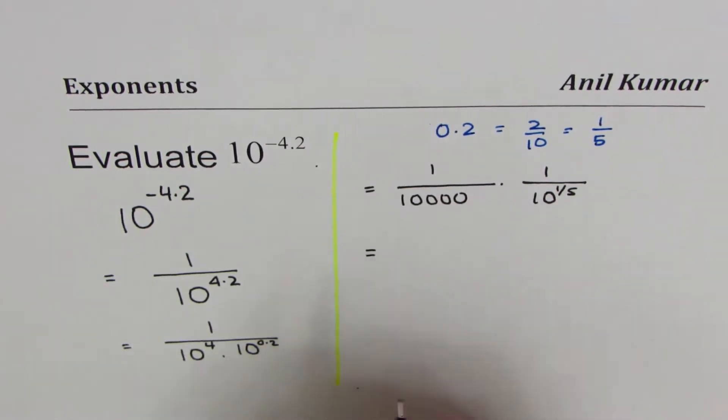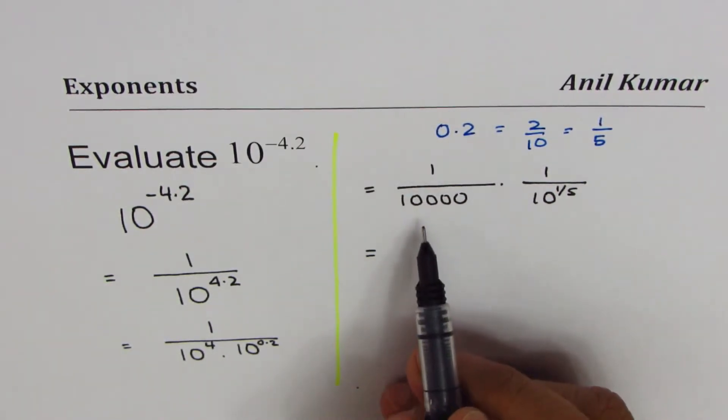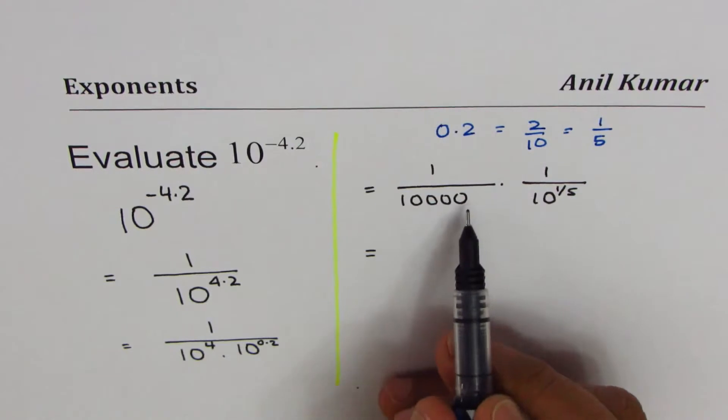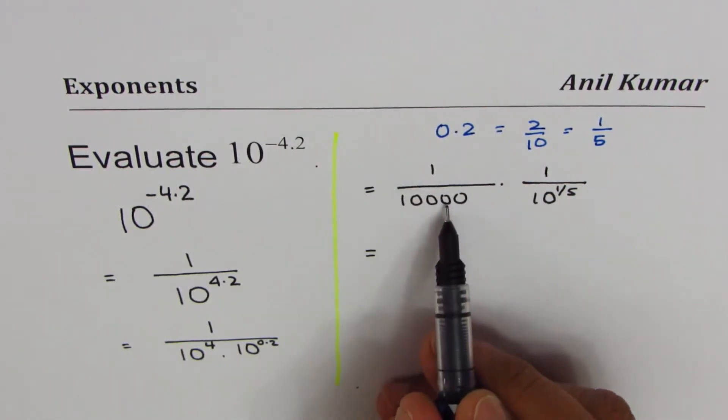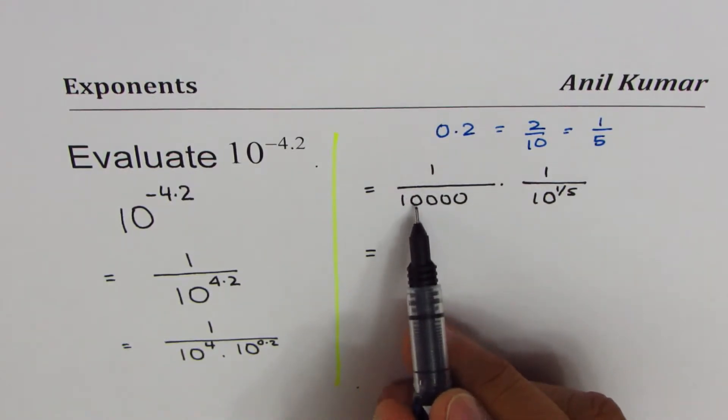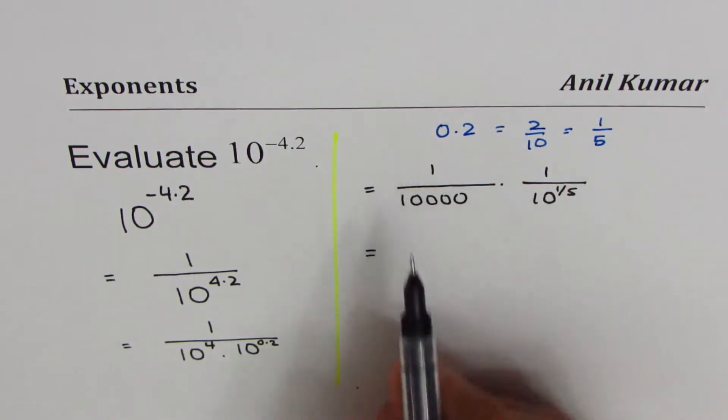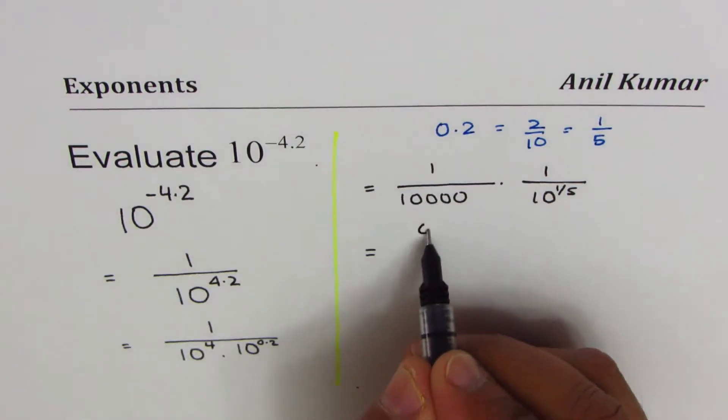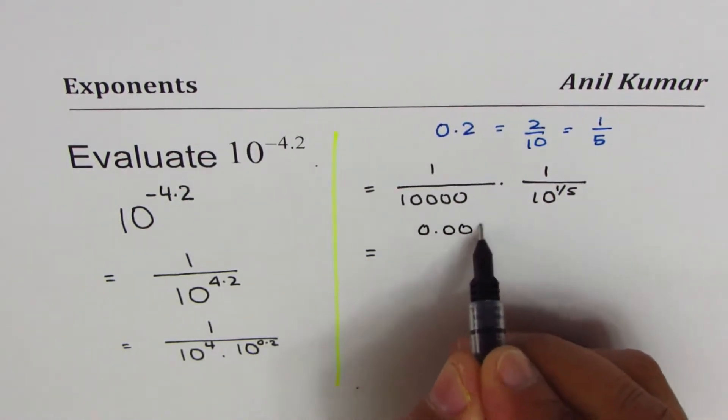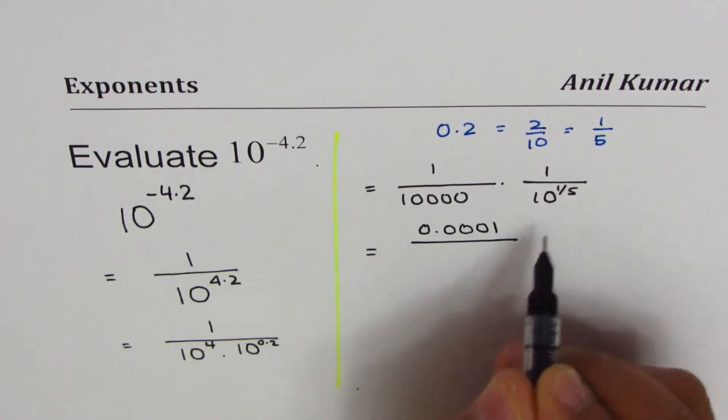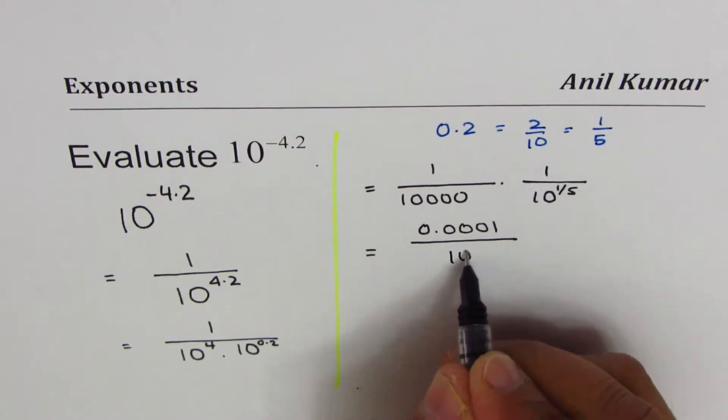When you divide by 10, 10 thousands - if I divide by 10 you get 0.1, 0.01, 0.001, 0.0001. So you get 0.0001 divided by fifth root of 10.